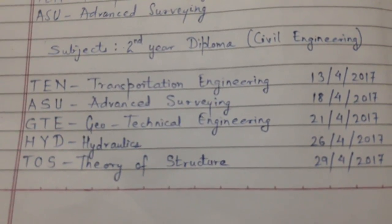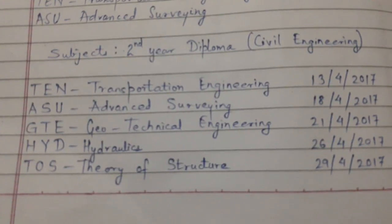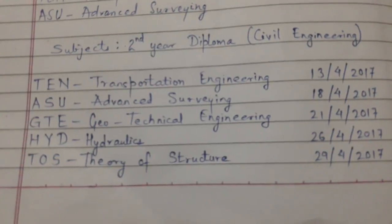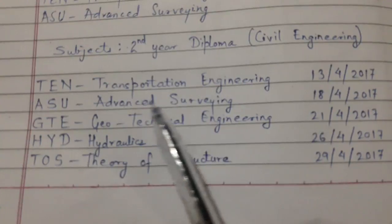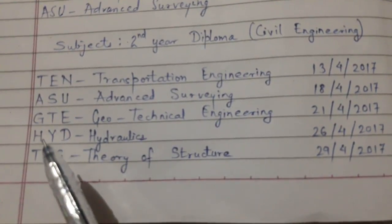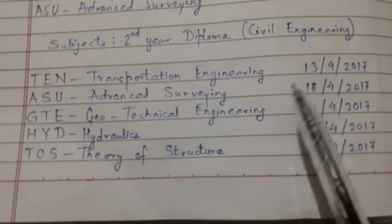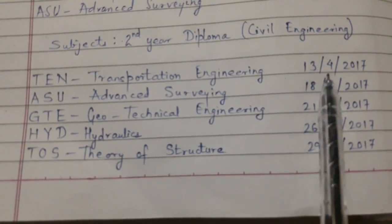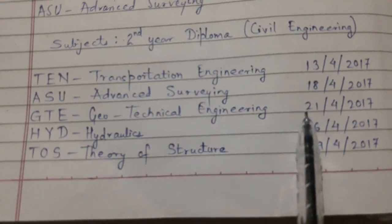Today's topic is timetable and time management for civil engineering second year diploma studies. There are five subjects: TEN (Transportation Engineering), ASU (Advanced Surveying), GTE (Geotechnical Engineering), HYD (Hydraulics), and TOS (Theory of Structure). The examination dates are: TEN on 13th April, ASU on 18th April, GTE on 21st April.